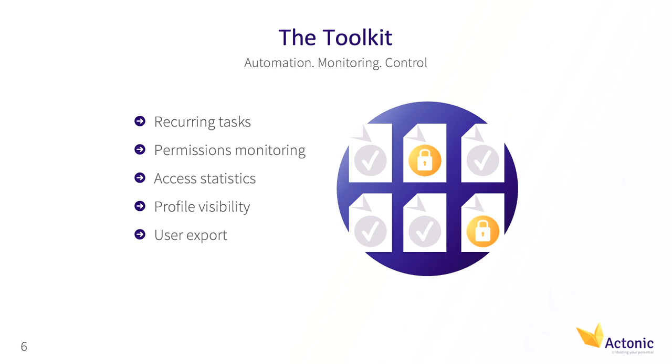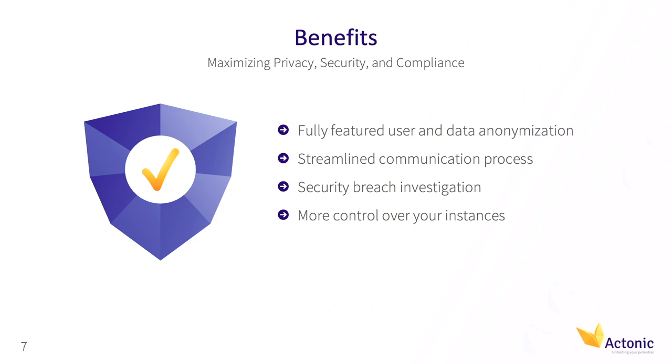You can see when access actually happened. With profile visibility, you can block the profiles of users or give users the ability to block their own profiles. For user export, it's a simple but powerful solution — you can export any kind of user from any group or from any project, filter it, and search it. You can export any user from anywhere you want based on your filtering and preferences.